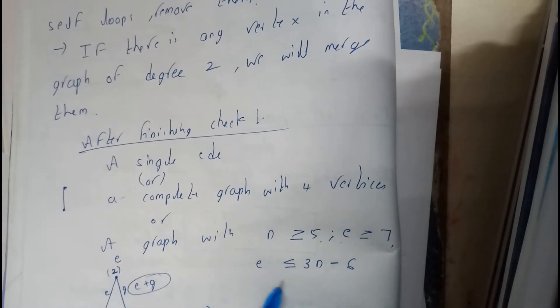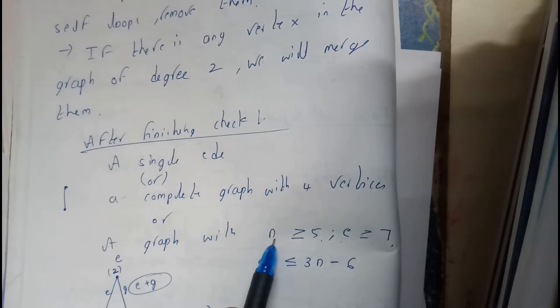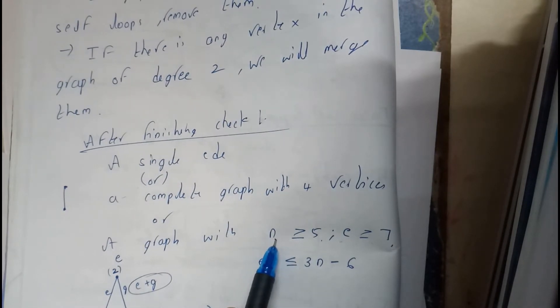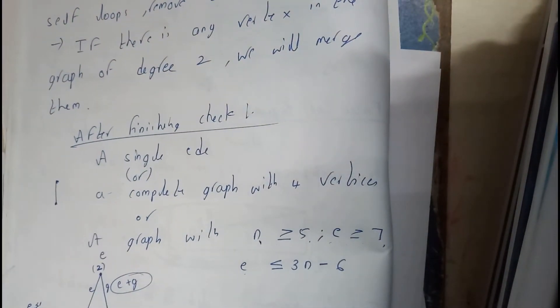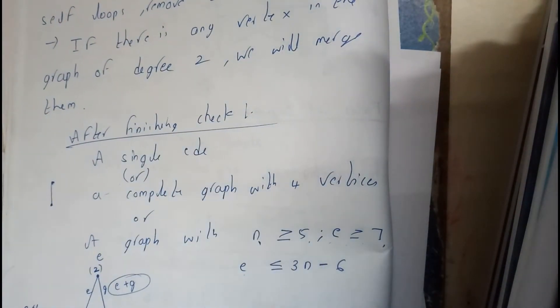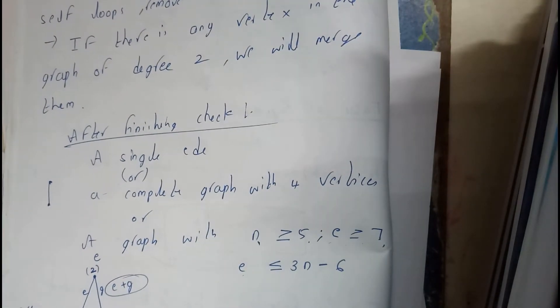A graph with n greater than or equal to 5 and e greater than or equal to 7, and e less than or equal to 3n minus 6. Here n is the number of vertices and e is the number of edges. These are the three conditions. If that fails to be in these three conditions, then that is not a planar graph.